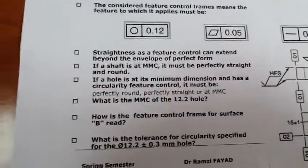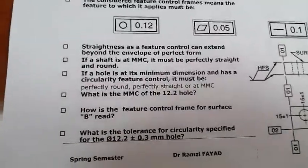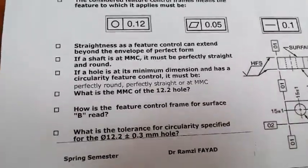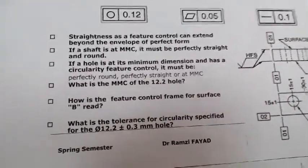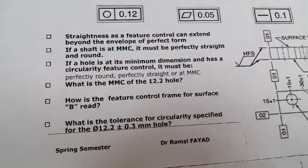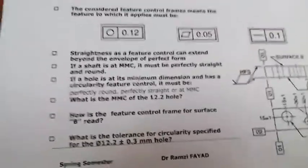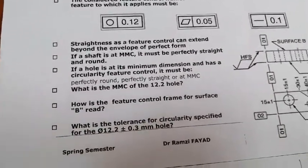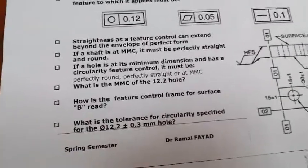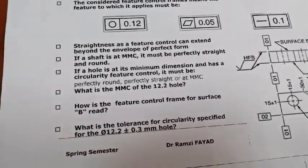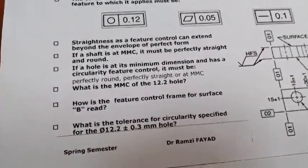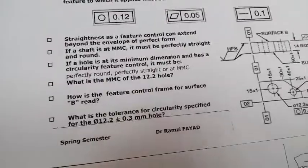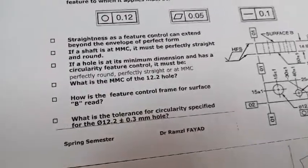Can straightness, as a feature control, extend beyond the envelope of perfect form? No — the envelope of perfect form is the maximum material condition. In our system, if it is a shaft, the maximum material condition must be perfectly straight and round, because all material has been used at maximum amount.